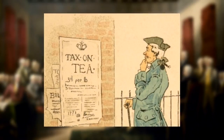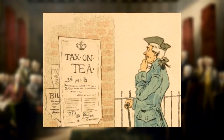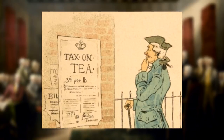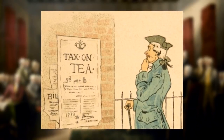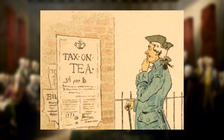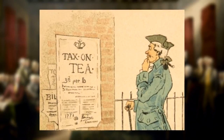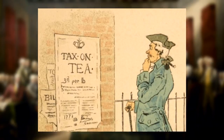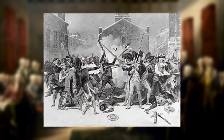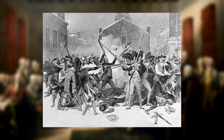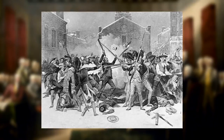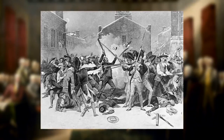On June 29, 1767, laws called the Townshend Acts added taxes on items imported by the colonists, including lead, paints, glass, tea, and paper. The levying of taxes seemed to be endless.